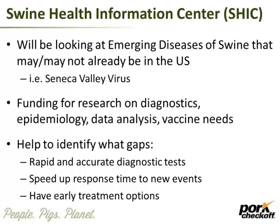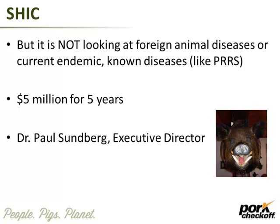We now have the Swine Health Information Center — Dr. Turner is sitting on that board. What they're doing is supplementing some of the work for foreign animal diseases, and also going out and looking at what else is out there that could come into the U.S. and present a problem, trying to set up an infrastructure to deal with that. The funding came from the Pork Board, but it is a separate entity. They're looking at diagnostics and epidemiology, including things like Seneca Valley virus and emerging diseases, or other things that may be here in the U.S. that are changing in incidence. They're funded at about $5 million for five years, and Paul Sundberg is now the executive director of that center.